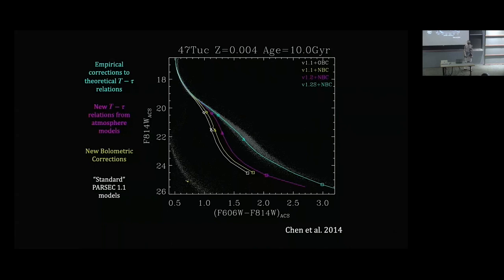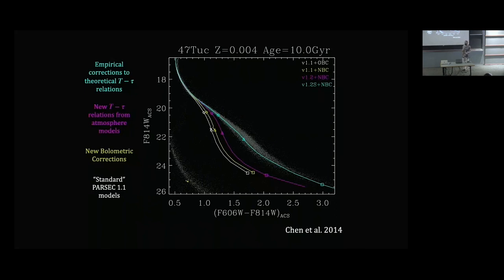The white curve shows what happens when you take a standard set of input physics from solar-type stars and extrapolate down to the lower main sequence — it's magnitudes off. The yellow curve shows improved bolometric corrections; the purple shows more careful stellar atmosphere models for the boundary condition; the blue is an empirical calibration of that boundary condition, which does a beautiful job reproducing observations across all star types — but not from first principles. The physics still isn't getting you what you want; this is an obvious place where improvements are needed.